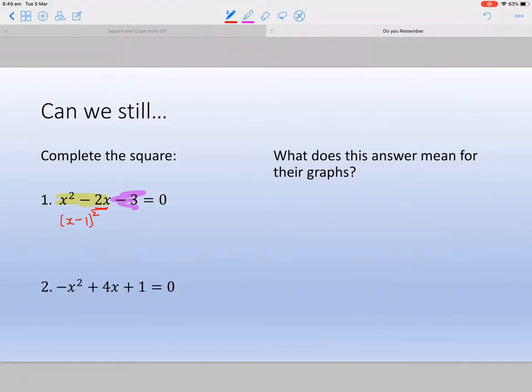Now I'm always going to take away whatever this number is squared. So that number squared is just one. And now I'm going to bring down this minus 3, so minus 3 equals 0. So our equation in completed square form is x minus 1 squared minus 4 equals 0.